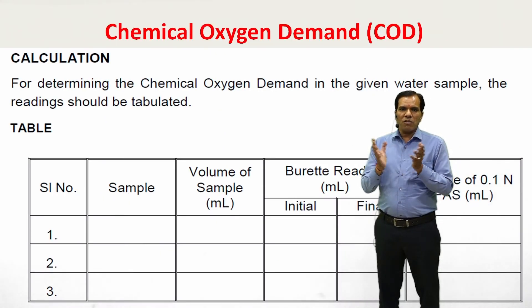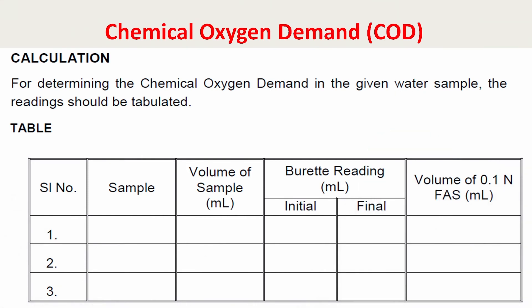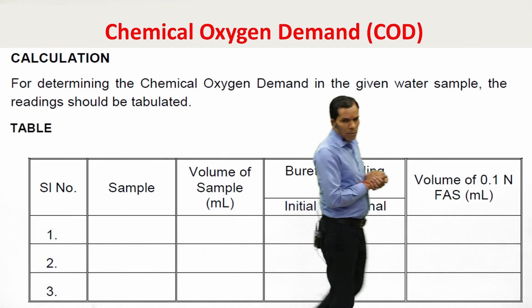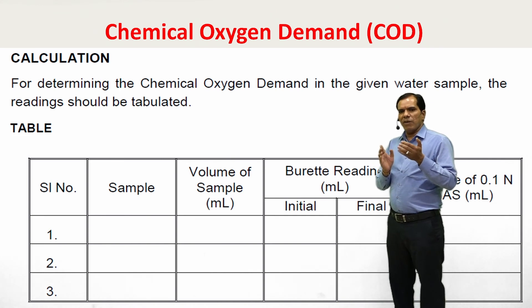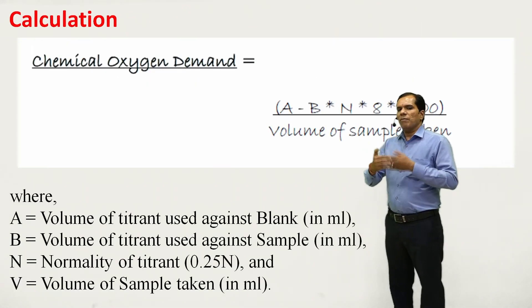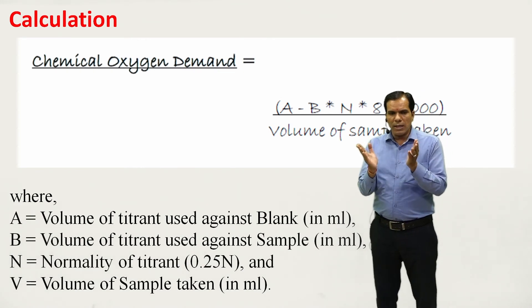In the observation table, record the sample name, volume of sample in milliliters, and burette readings — initial reading (0.00 ml) and final reading. The volume of 0.25 N ferrous ammonium sulfate used is calculated as final minus initial reading. The experiment is repeated until concordant readings are obtained.